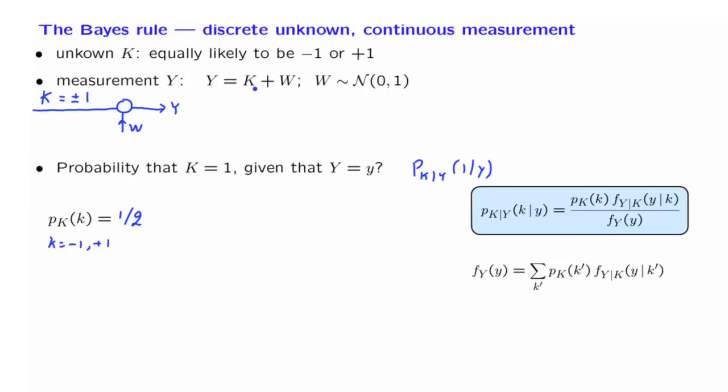So if K is equal to 1, we're taking a standard normal, and we add a value of plus 1. So Y, given that K is equal to plus 1, is going to be a standard normal plus 1. What does that do? If we take a standard normal and add a constant to it, that changes the mean, and makes the mean equal to 1, and does not change the variance.